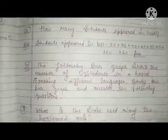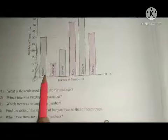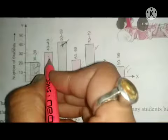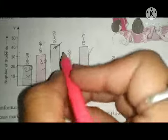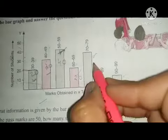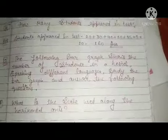How many students appeared in the test in total? We add all the bars: 20 plus 30 plus 40 plus 20 plus 35 plus 5 plus 10. If we add all of these together, our total answer will be 160 students appeared in the test.